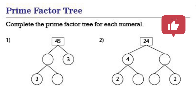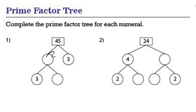The first number is 45. 3 is already written there, so 45 divided gives us 3 and 15, since 3 times 15 is 45. 3 is a prime number so we don't divide that. Then 15 is divided into 3 and 5. So the prime factors of 45 are 3 × 3 × 5.